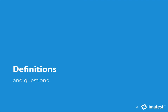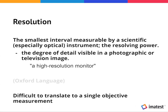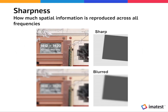So let's get into definitions. What is resolution? If you look it up in the dictionary, the definition closest to what we think of in the imaging term is: the smallest interval measurable by a scientific or optical instrument — the resolving power — and the degree of detail visible in a photographic or television image, such as a high resolution monitor. This is difficult to translate into a single objective measurement, and I will explain why. Sharpness is a more complete definition of how much spatial information is reproduced across all frequencies, where resolution is usually associated with the limit of the finest detail you can see in that image.